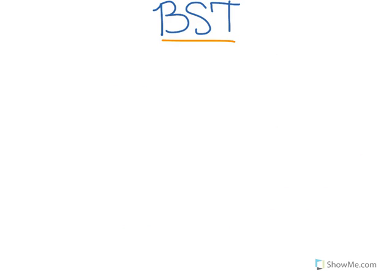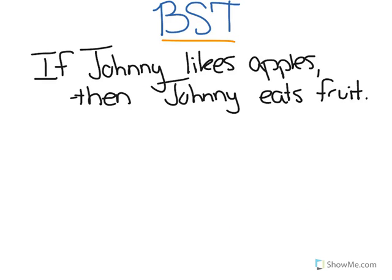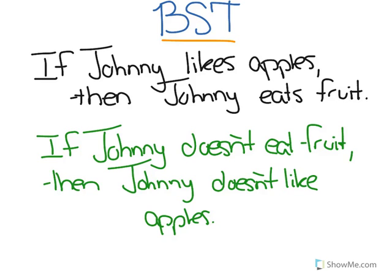So if we take an example like: if Johnny likes apples, then Johnny eats fruit. Using a contrapositive proof method, we would prove this by proving that if Johnny doesn't eat fruit, then Johnny doesn't like apples. And these two statements are logically equivalent.